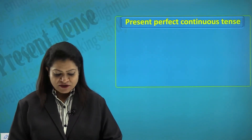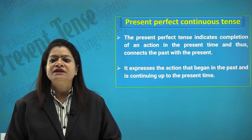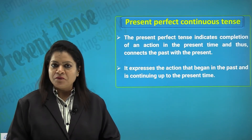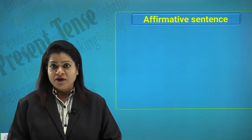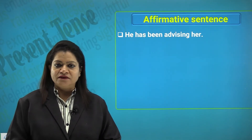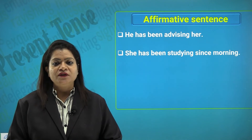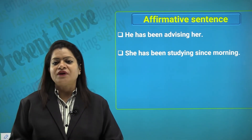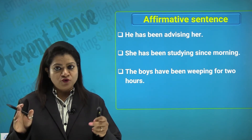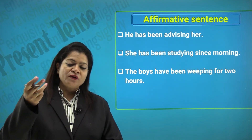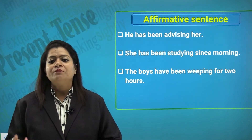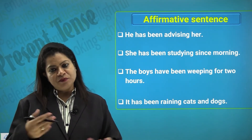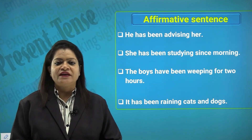Let us look at the present perfect continuous tense. This tense indicates an action that began in the past and is continuing up to the present time, thus connecting past with present. Affirmative examples: 'He has been advising her' — started some time in the past and is still continuing. 'She has been studying since morning.' 'The boys have been weeping for two hours' — limited to a definite period. 'It has been raining cats and dogs' — 'has been' plus the present participle, where 'cats and dogs' is an idiom for heavy downpour.